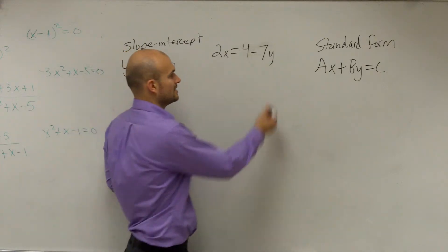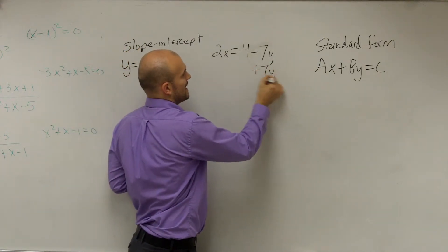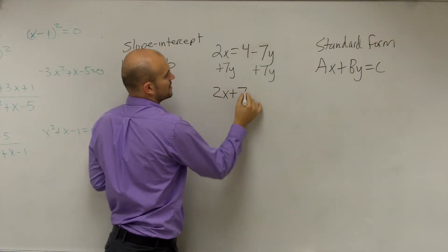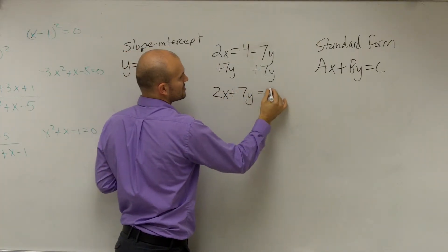Just get them on the same side by adding 7Y to both sides. Therefore, I have 2X plus 7Y equals positive 4.